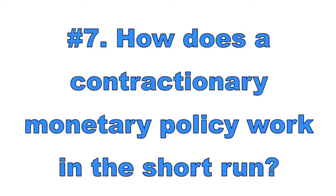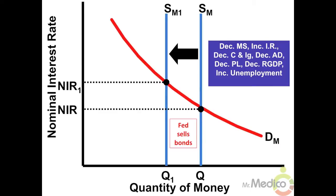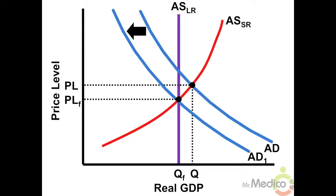Number seven: how does a contractionary monetary policy work in the short run? A contractionary, or tight, monetary policy makes most sense during periods of high inflation. The Fed will sell bonds on the open market, increase the discount rate, or increase the reserve ratio. In the money market, this is represented by a leftward shift of the vertical money supply curve. This will raise interest rates and decrease investment and consumer spending. As a result, aggregate demand shifts to the left: real GDP decreases, price level decreases, and unemployment increases.